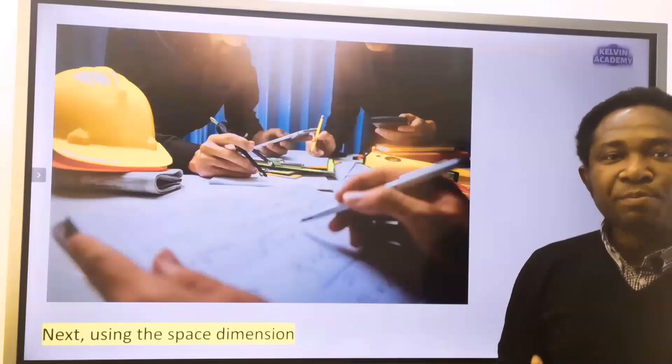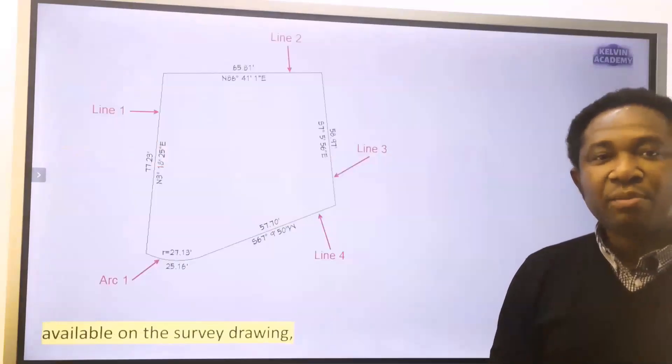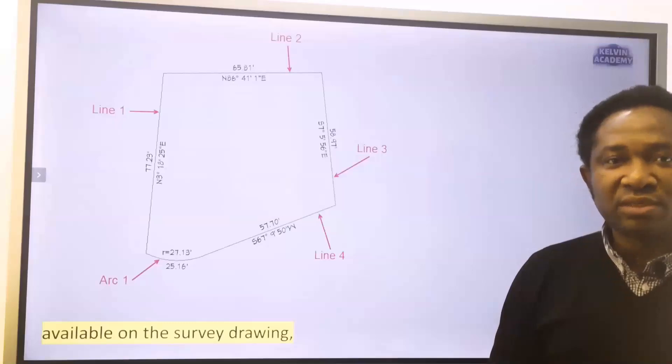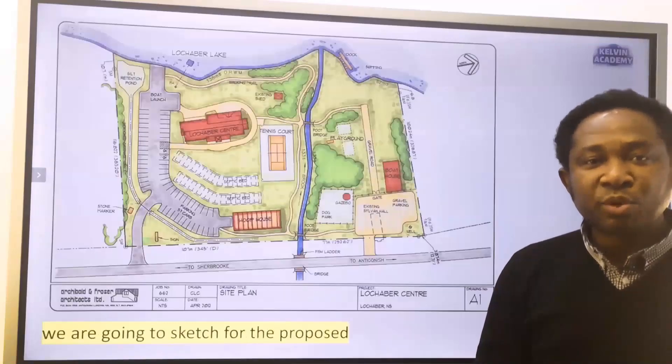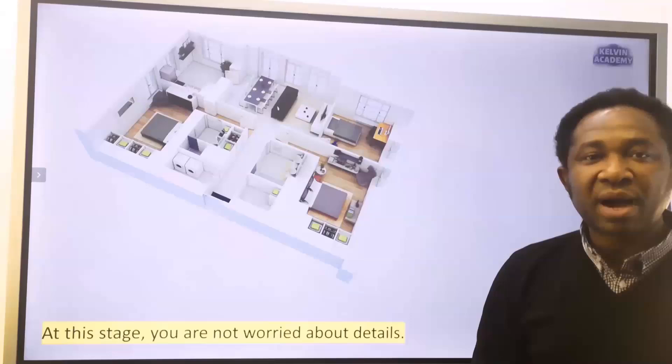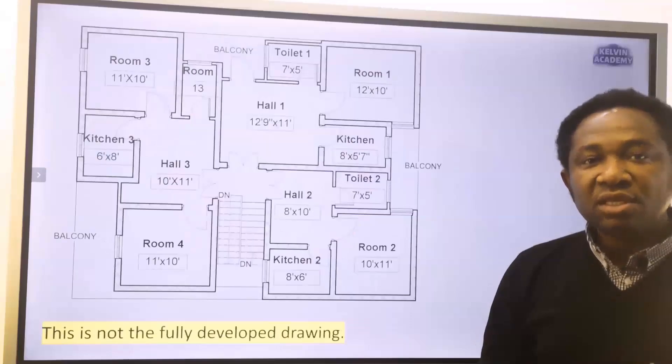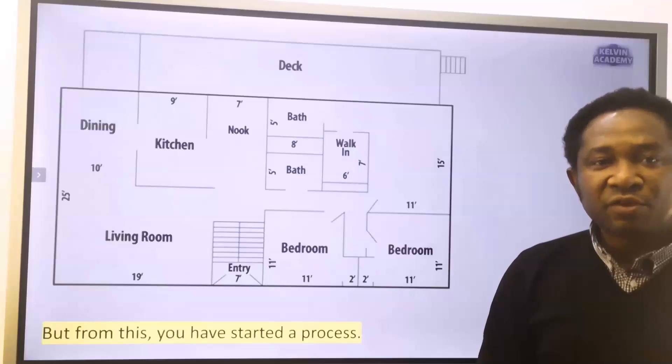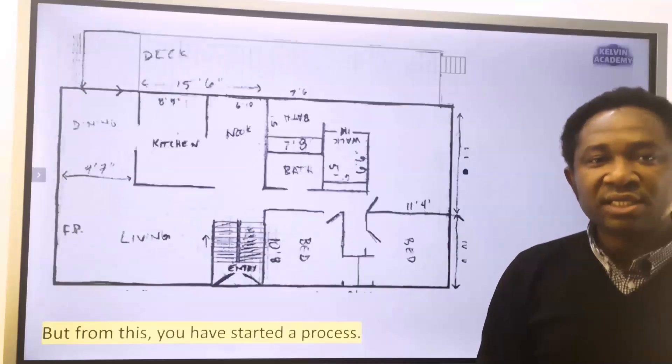Next, using the space dimension available on the survey drawing, we are going to sketch for the proposed building project using freehand drawing. At this stage, you are not worried about details. This is not the fully developed drawing, but from this, you have started a process.